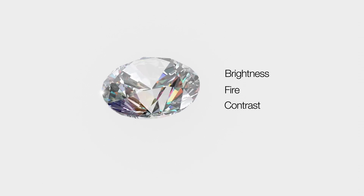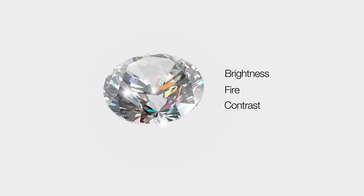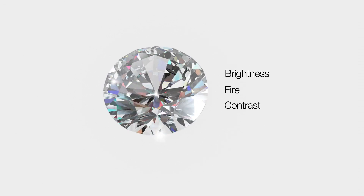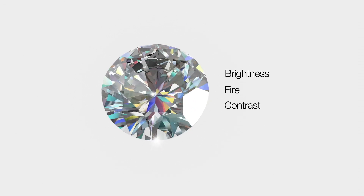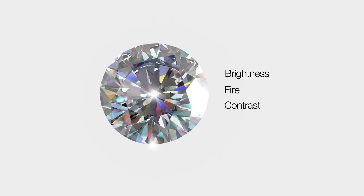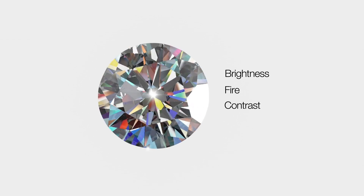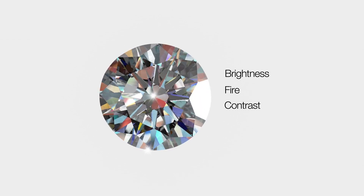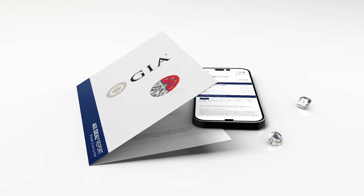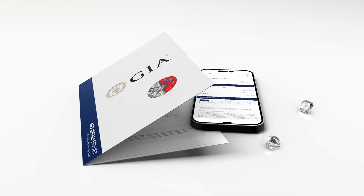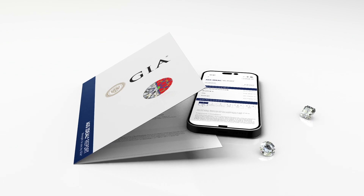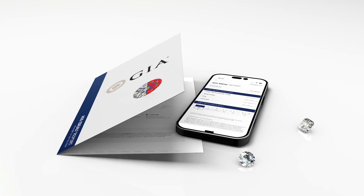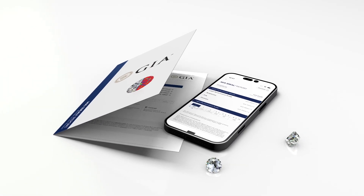By analyzing its internal and external reflections of white light, the display of white light splitting into colors, and the size, arrangement, and contrast of bright and dark areas, the AGS Ideal Report tells the story of a diamond's artistry and allure.